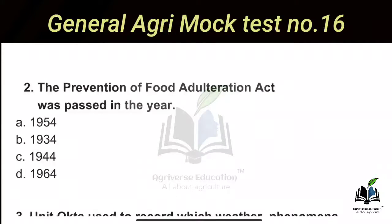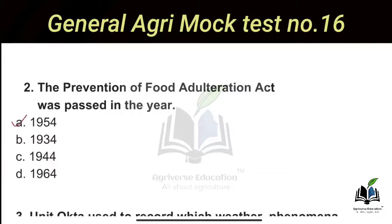The next question is: The Prevention of Food Adulteration Act was passed in which year? The options are 1954, 1934, 1944, and 1964. The right answer is Option A, 1954. So in the year 1954, the Prevention of Food Adulteration Act was passed.